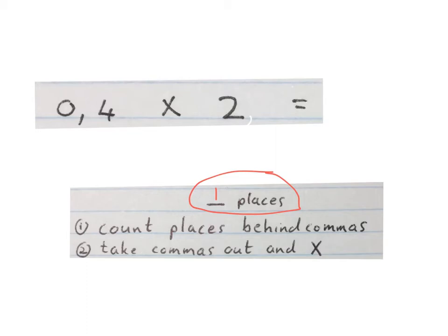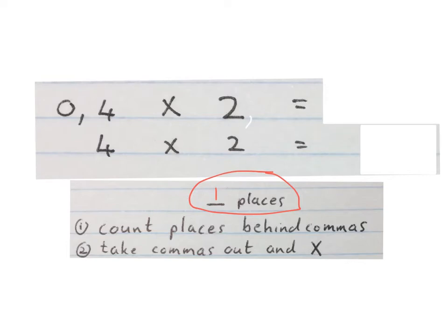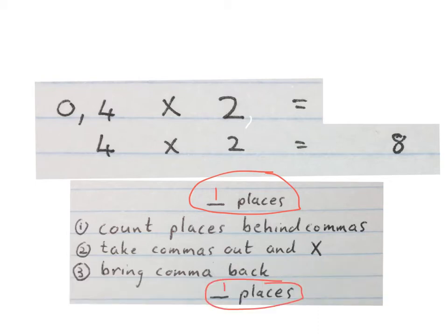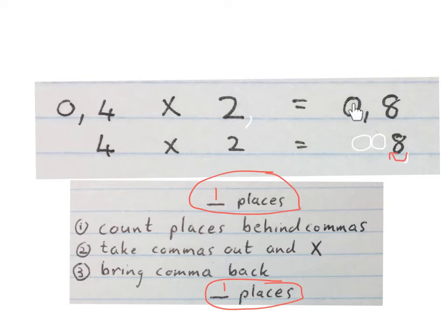Next thing we're going to do is take out the commas and multiply. So you write 4 times 2 without the commas. In this case the answer is 8. Lastly, we bring back the comma the same amount of places that you counted in the beginning. So you take the comma from behind the 8 and you bring it in one place forward. You write your answer: 0,8. So 0,4 times 2 is 0,8.